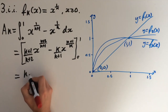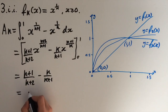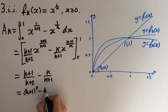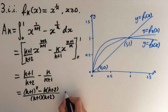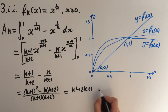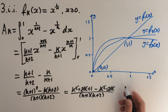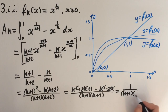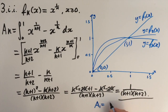So what we're left with is k plus 1 over k plus 2 minus k over k plus 1. Let's cross multiply to simplify this. We get k plus 1 squared minus k times k plus 2, all over k plus 1 times k plus 2. Expanding the brackets gives k squared plus 2k plus 1 minus k squared minus 2k, all over k plus 1 times k plus 2. The k squared terms cancel and the 2k terms cancel, leaving us with 1 over k plus 1 times k plus 2. This is our answer for ak. To verify: for k equals 1, we get 1 over 2 times 3, which is indeed 1 over 6, as required.